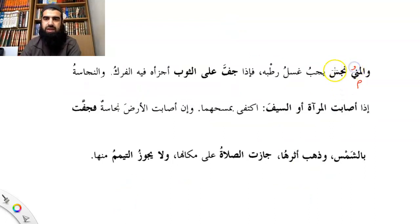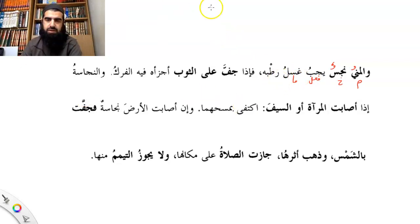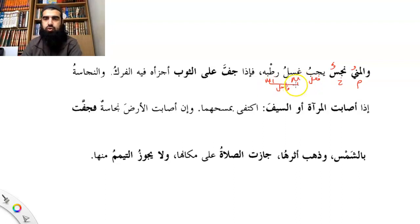Tarakib: Mani is mubtada, so it takes dhamma. Najasun is the khabar. Yajibu is the fi'al. Ghaslu is actually the mudaf — let's change that. It's the mudaf, and ratab is the mudaf ilayhi. The mudaf plus the mudaf ilayhi together become the fa'il.